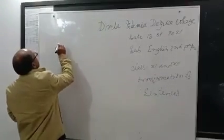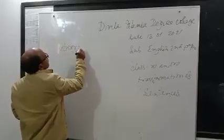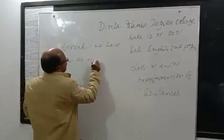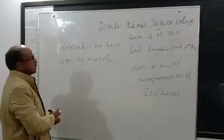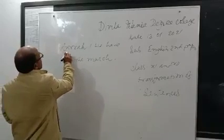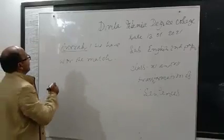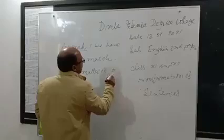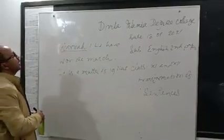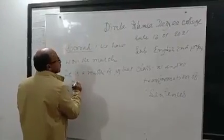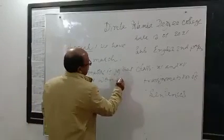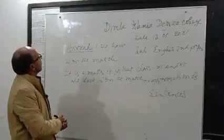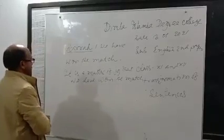If we see 'hurrah' in a sentence, for example 'Hurrah! We have won the match!' — this type of exclamatory sentence is transformed by using 'It is a matter of joy that' in place of 'hurrah.' The rest of the sentence remains the same: 'It is a matter of joy that we have won the match.'